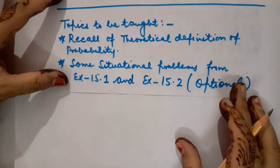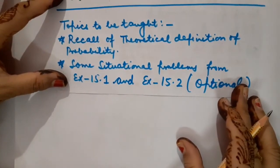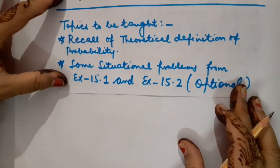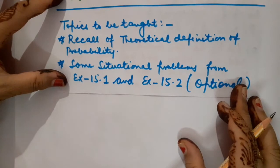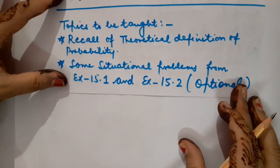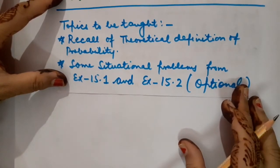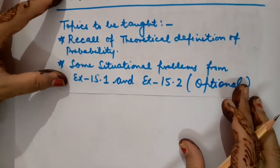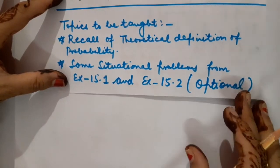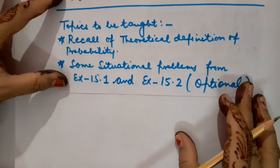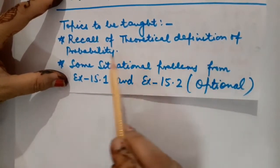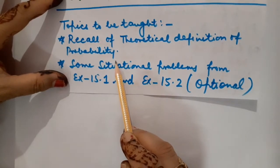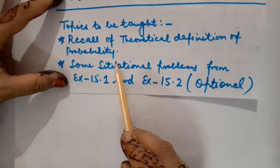In my previous two lectures of Chapter 15, Probability, I made you understand the definition of probability, experiment, random experiment, event, its types, outcomes as well as favorable outcomes. Along with it, I made you understand the theoretical definition of probability. In my second lecture, I made you recall all these definitions once again.